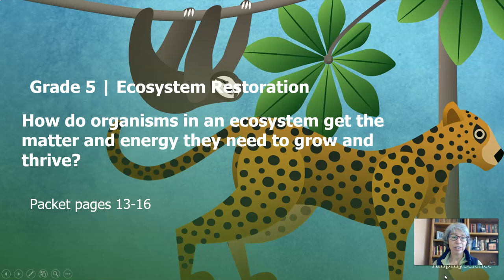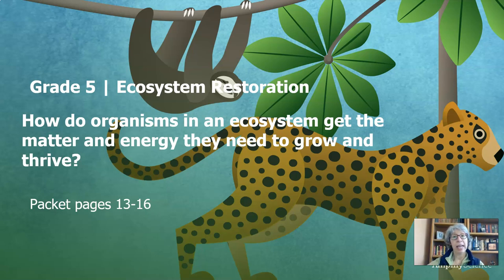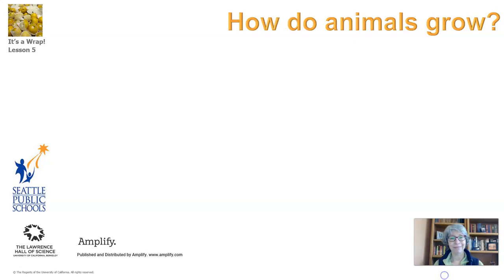This unit is called Ecosystem Restoration. We have been building our learning to help us answer this question: how do organisms in an ecosystem get the matter and energy they need to grow and thrive? We'll be working through packet pages 13 through 16. And if you have paper around your house, you can just use that instead. We've been working through this question: how do animals grow?